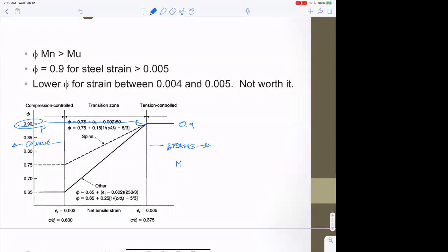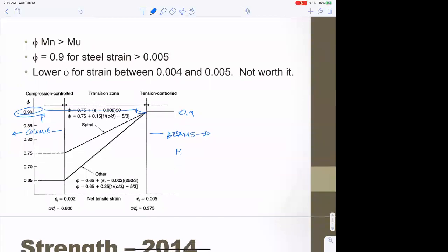Columns are not as reliable. There's more variability in the results because concrete compressive strength is variable - if you've ever broken cylinders, you know that. The behavior depends on whether the confining steel is spiral or other.